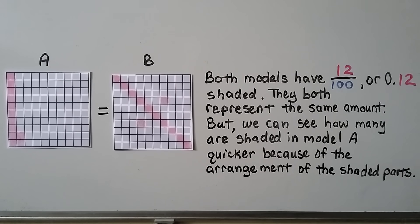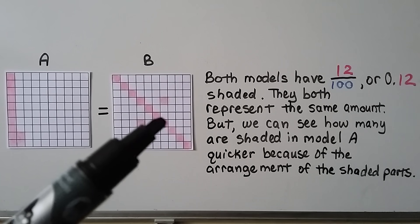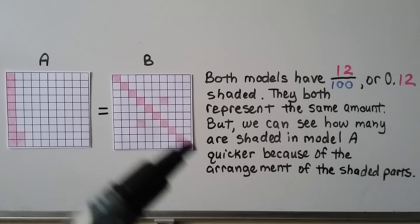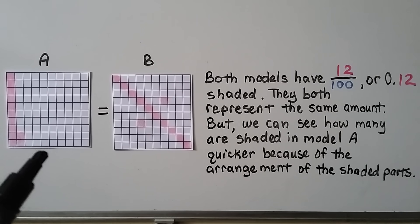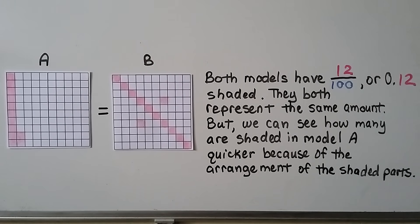Let's take a look at these two models — model A and model B — and it says they're equal to each other. Both models have 12 hundredths, or 0 and 12 hundredths, shaded. Going on a diagonal from corner to corner are 10 parts, then 11 and 12. They both represent the same amount, but we can see how many are shaded in model A much quicker because of the arrangement of the shaded parts — 10 and 2 makes 12. That's much quicker than having to count them when they're spread all over the place. But both models have 12 hundredths shaded.